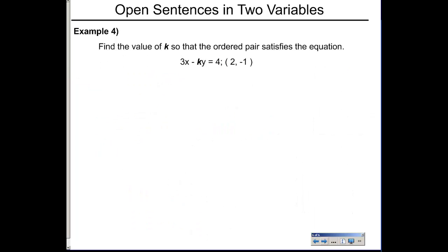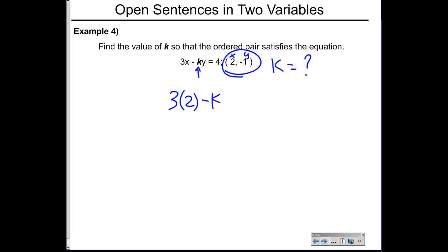Example 4: find the value of k so that the ordered pair satisfies the equation. The equation contains k times y. We need to find what k must equal so that the given point is an actual solution. Substitute the x and y values from the ordered pair — x = 2 and y = −1 — into the equation and solve for k.